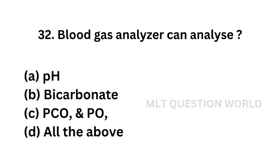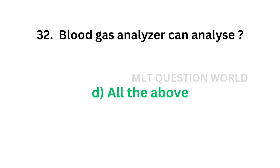Question number 32: A blood gas analyzer can analyze — option A: pH, option B: bicarbonate, option C: partial pressure of carbon dioxide and partial pressure of oxygen, option D: all of the above. The correct answer is option D, all of the above. A blood gas analyzer can analyze pH, bicarbonate, and partial pressures of oxygen and carbon dioxide.